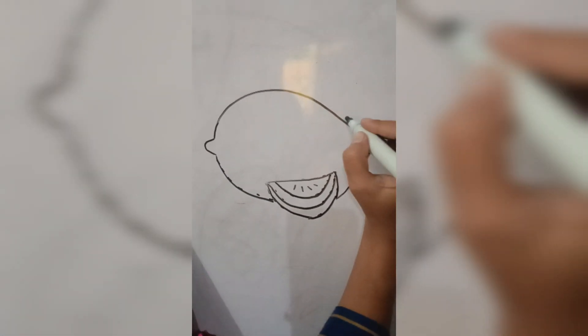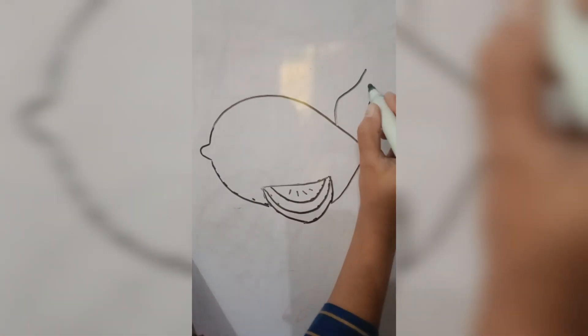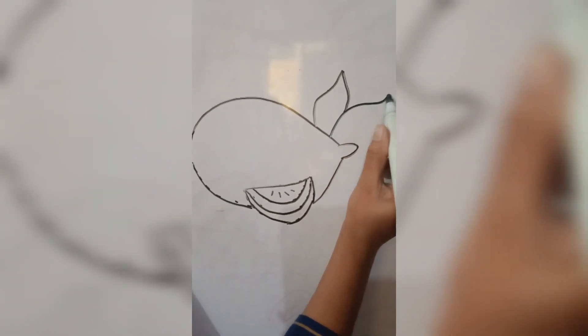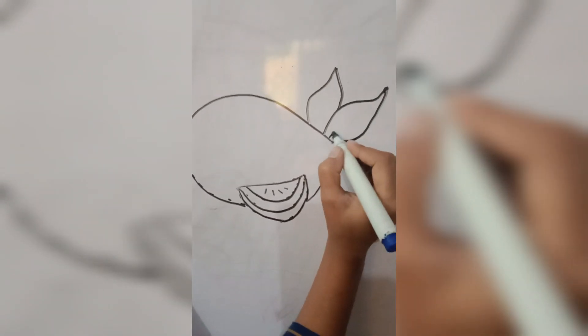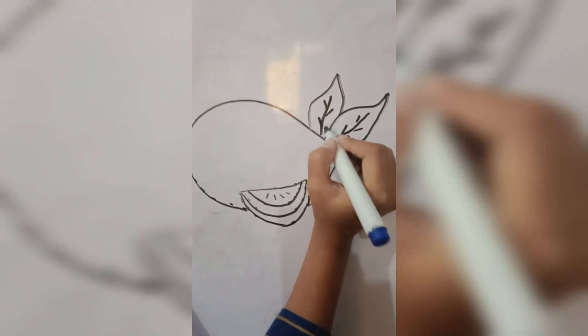Use a green marker for this part. Draw a leaf on the stem using the green marker. A simple leaf shape with pointed ends should work well.